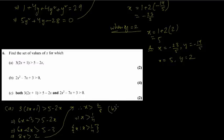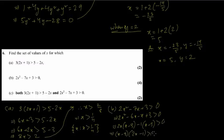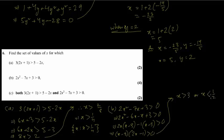Part b is a quadratic inequality: 2x squared minus 7x plus 3 greater than 0. Using middle term break: 2 times 3 is 6, and 6x minus x gives minus 7x. So 2x squared minus 6x minus x plus 3 greater than 0. Taking 2x common: 2x(x minus 3) minus 1(x minus 3) greater than 0, giving (x minus 3)(2x minus 1) greater than 0. For a greater than inequality, x is greater than the larger root, so x greater than 3, or x is less than the smaller root, so x less than 1/2.